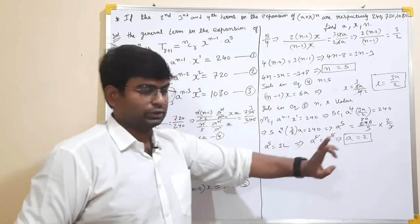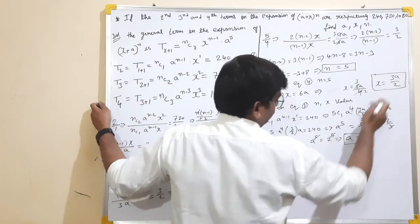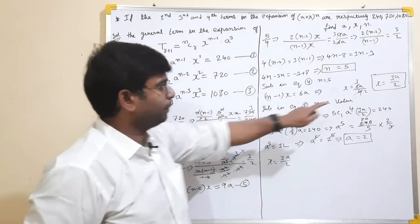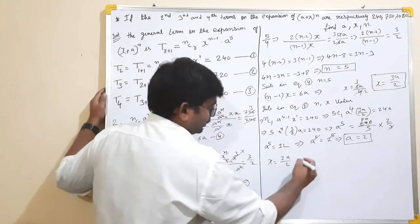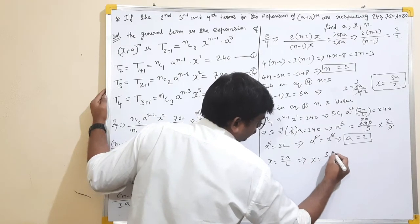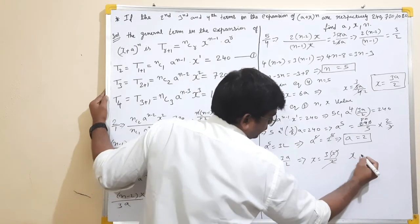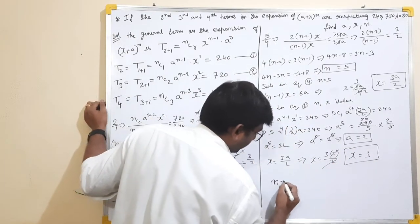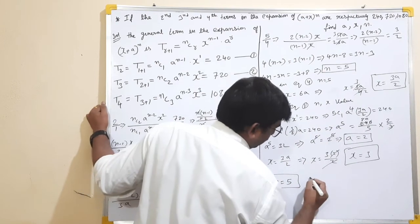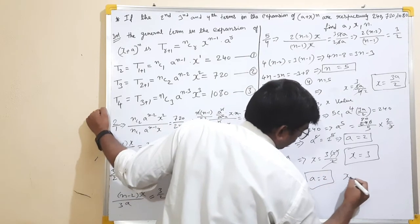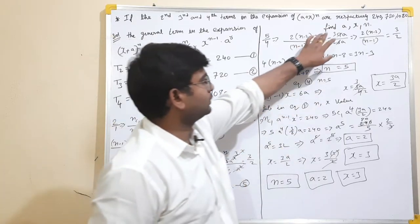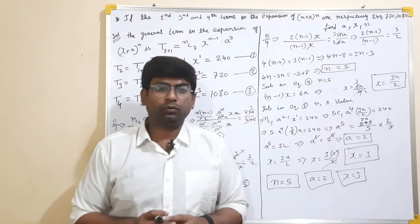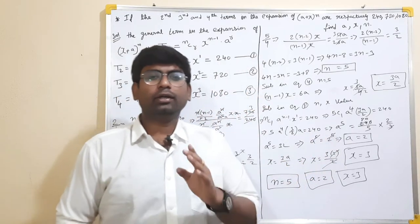Therefore A is equal to 2. Now substituting A = 2 into X = 3A/2: X = 3*2/2 = 3. So X equals 3. Hence we got all the values: A is 2, X is 3, and N is 5. I hope this video was helpful. Please like and subscribe. Bye.